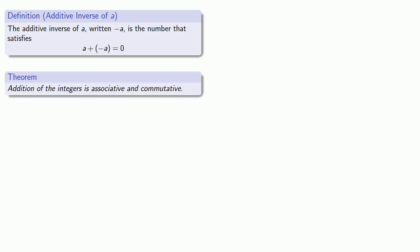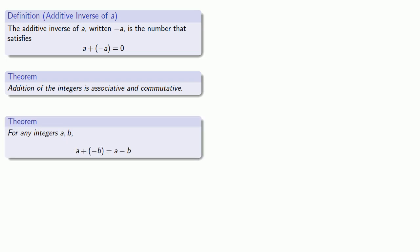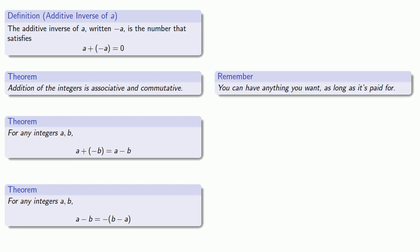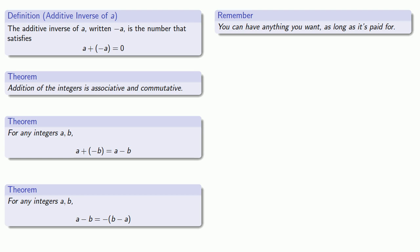Addition of integers is both associative and commutative. For any integers A and B, A plus the additive inverse of B is the same as A minus B, and A minus B is the same as the additive inverse of B minus A. And finally, an important and useful idea: you can have anything you want as long as it's paid for.